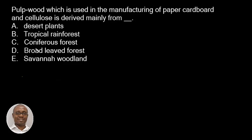Hi, I am Uluwakemi. I am excited to have you here again. This is GEM Geography 2017 and the question goes: 'Pulp wood, which is used in the manufacturing of paper, cardboard, and cellulose, is derived mainly from...'